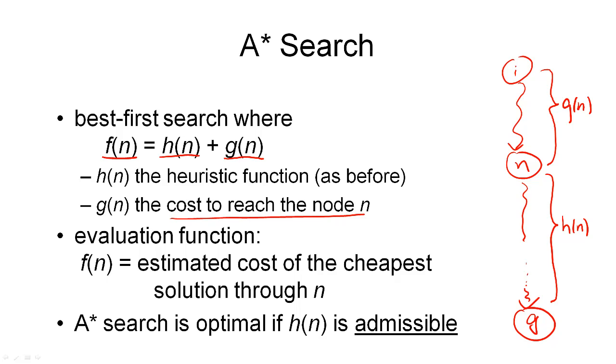The cheapest solution through n surely must consist of the path that goes from the initial state to n, and the cost of that is given by g of n. And it consists of the cost of getting from n to the goal node, and we can estimate that using the heuristic function. So when we use this evaluation function to select the next node from the fringe, we are selecting that node n which looks to be on the cheapest path to a goal node. And we can show that A* search is optimal if our heuristic function is admissible, and that means that it always underestimates the distance to the goal.